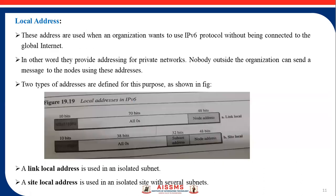The last address type is local address. These addresses are used when an organization wants to use the IPv6 protocol without being connected to the global internet — in other words, they provide addressing for private networks. Nobody outside the organization can send a message to a node using these addresses. Two types of addresses are defined for this purpose: link local address and site local address. Link local address is used in an isolated subnet, and site local address is used in an isolated site with several subnets, as shown in this figure. This is all about IPv6 addresses.